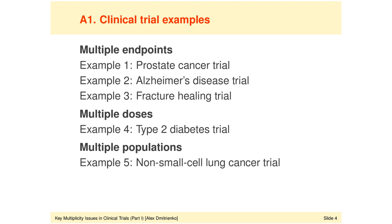I have intentionally chosen examples from different therapeutic areas, including oncology, diabetes, and neuroscience, because this will help illustrate an important point that multiplicity issues affect virtually all phase three trials, regardless of indication.